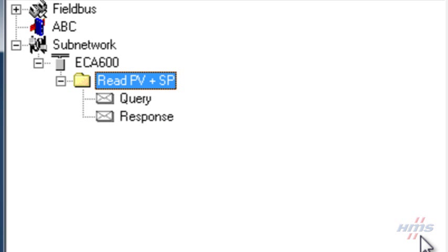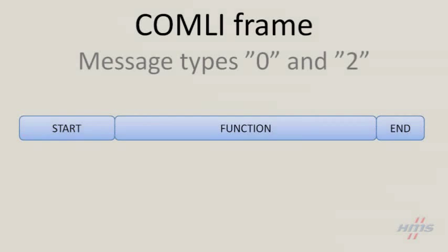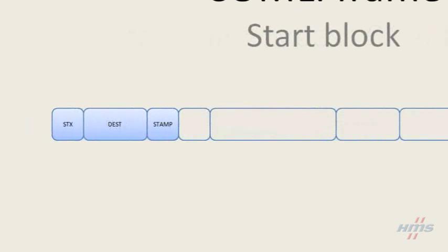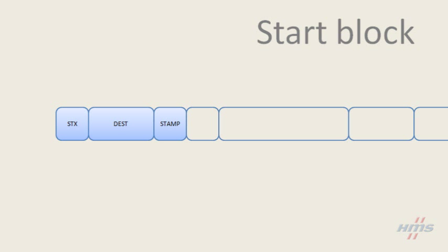But first, a briefing on the two Comly message types might be appropriate. The Comly message type 0 and type 2 frames consist of a start, function and an end block. The start block has three frame objects: the start text object of length 1, always set to the ASCII start text character.